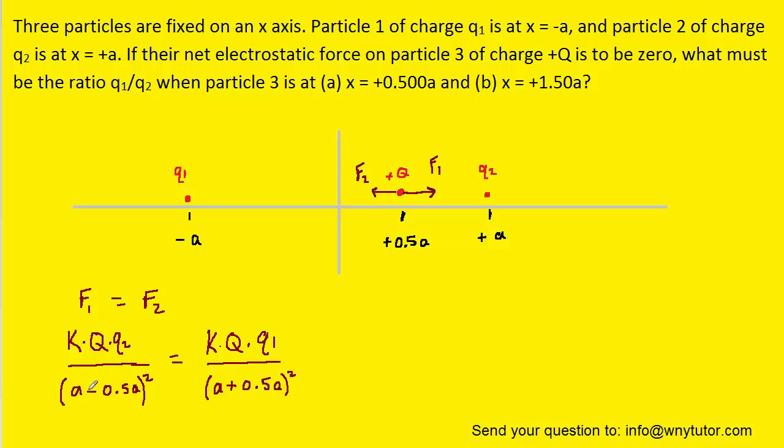Then we divide by the distance between the charges squared. We want to make sure that these distances make sense. This distance right here is going to be the distance between charge Q and Q2. If we look at the diagram, that distance would be right here. From here to here was marked as positive A, and from here to here was half of an A. So to get that distance, we just subtract the two.